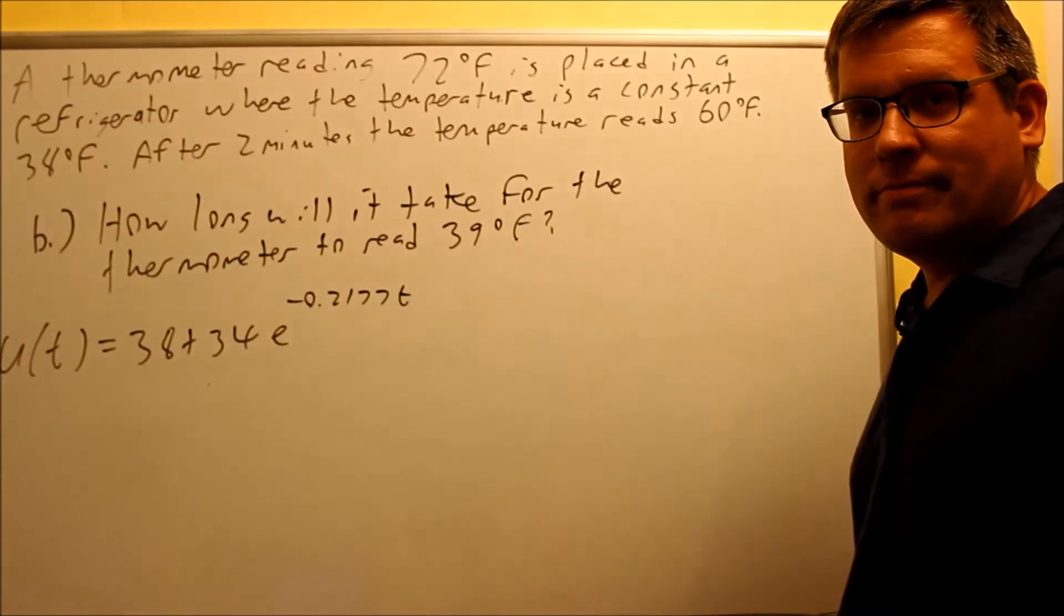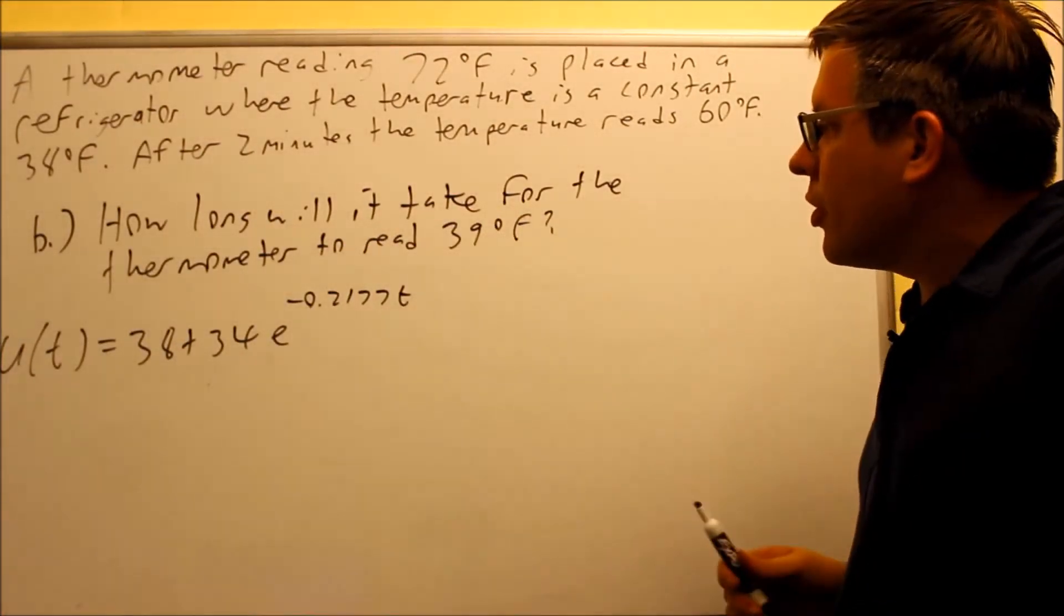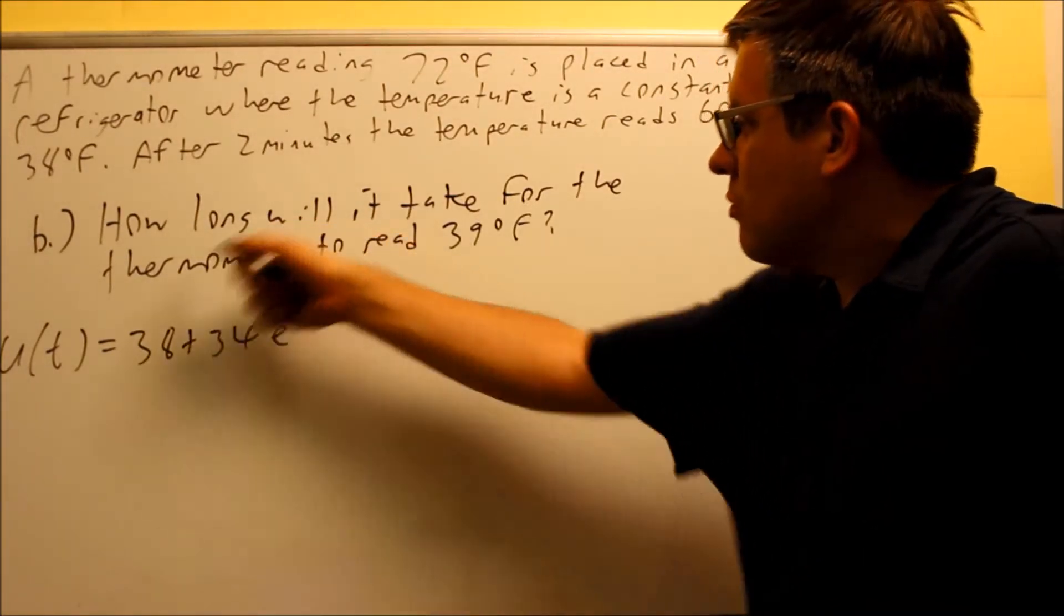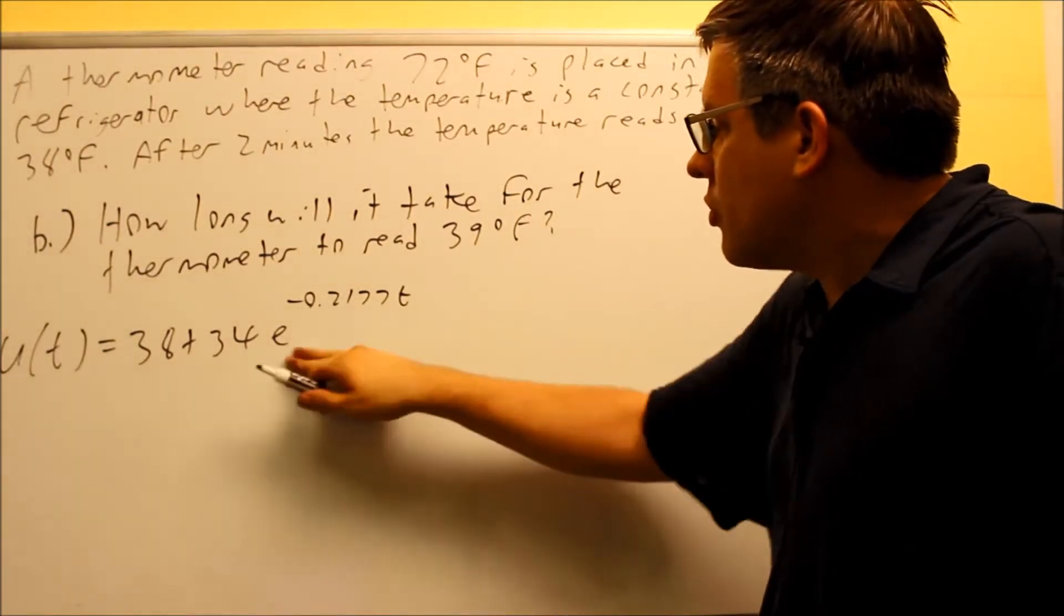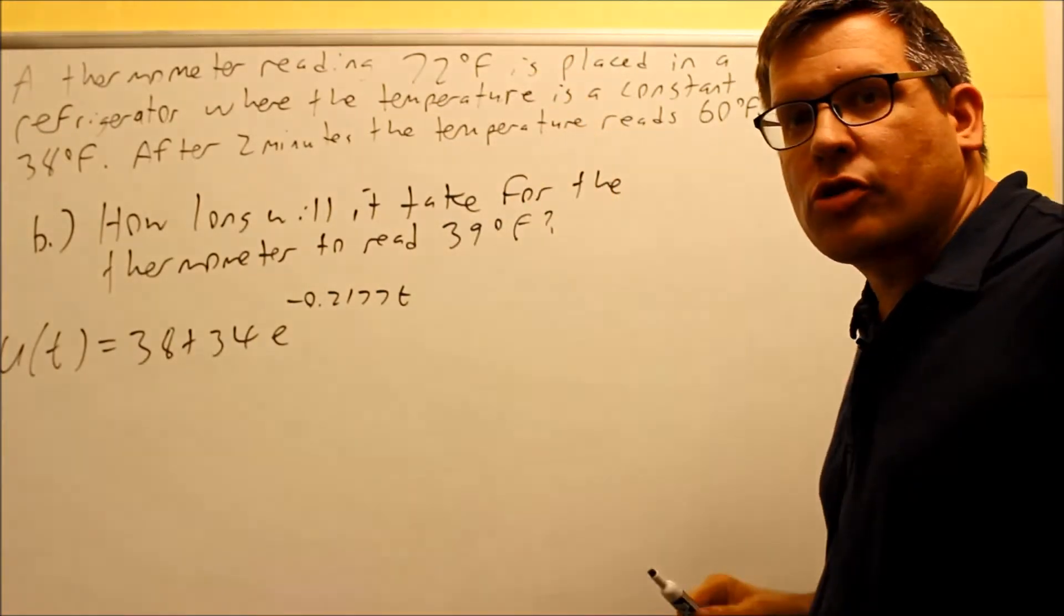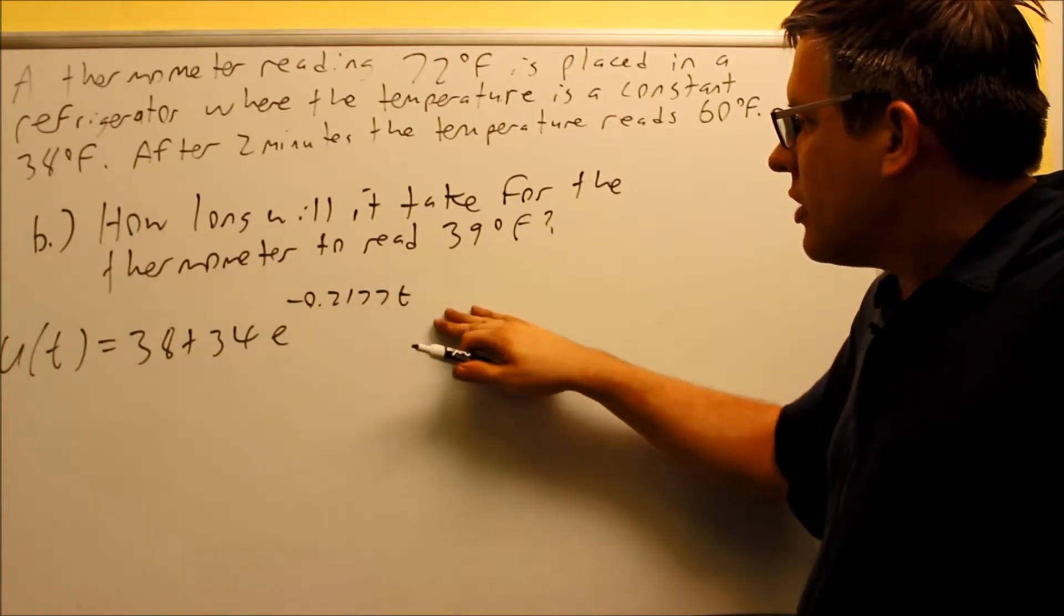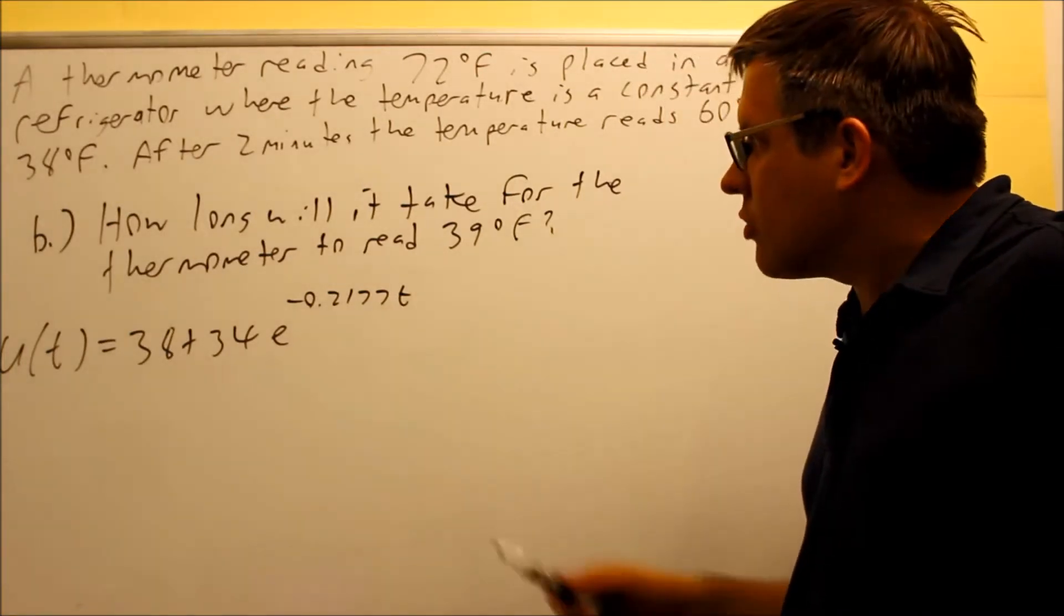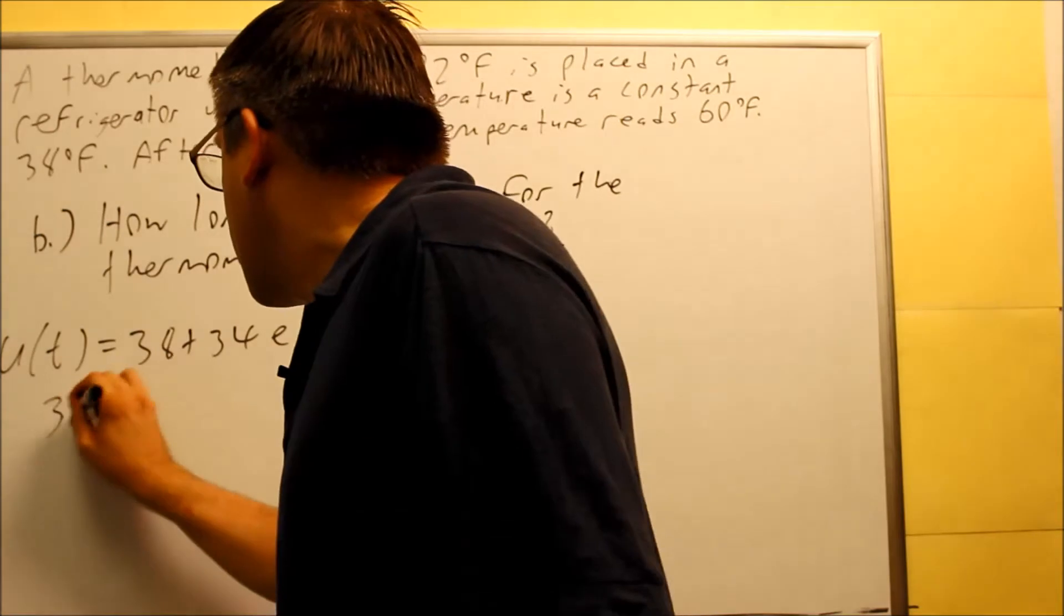Now we'll take a look at Part B. How long will it take for the thermometer to read 39 degrees Fahrenheit? We're going to use the same function from Part A, the Newton's Law of Cooling formula specific to the information that was originally provided. The 39 degrees is going to go into u(t) because they're asking us for how long, they're asking for a time.